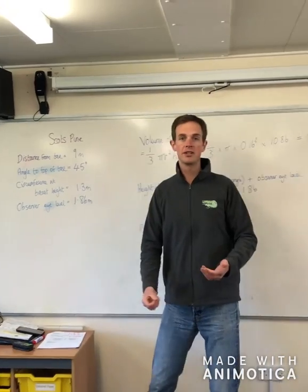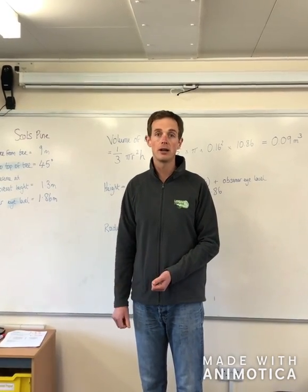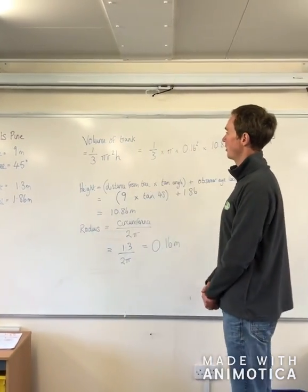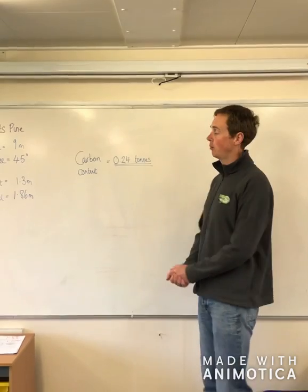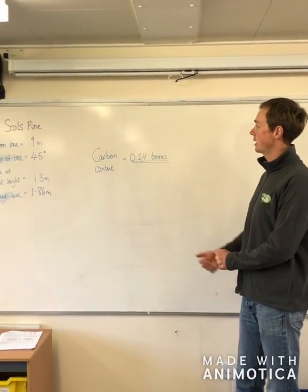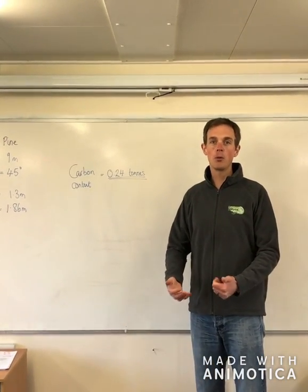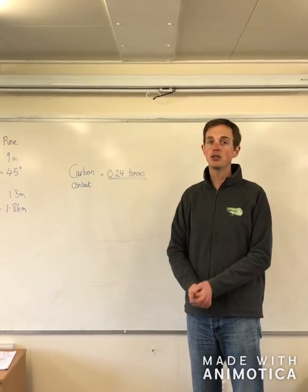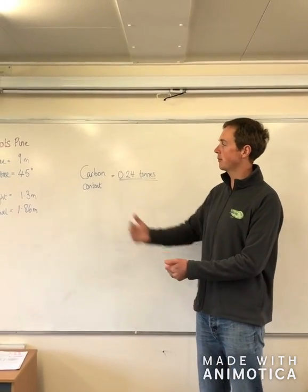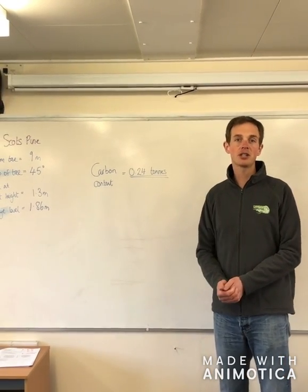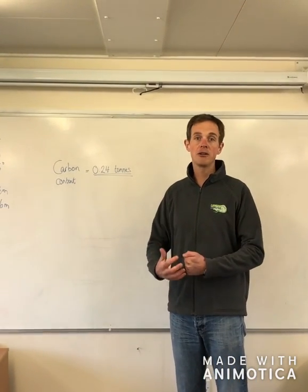There's going to be a worksheet that goes along with this video, where we're going to show you the next few steps of how to work out the carbon in the tree. The main bit of fieldwork we've just shown you is working out the volume of that particular Scots pine tree. Using the worksheet, we've worked out that in our Scots pine tree we've got 0.24 tonnes of carbon, which isn't a small amount but neither is it a very big amount. We'd love to see you get out into your garden, a local park, or a local woodland, find a nice tree, go and measure it using the skills we've shown you, and share any photos or facts and figures with us on our social media.